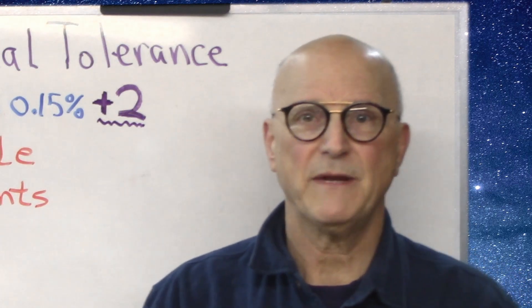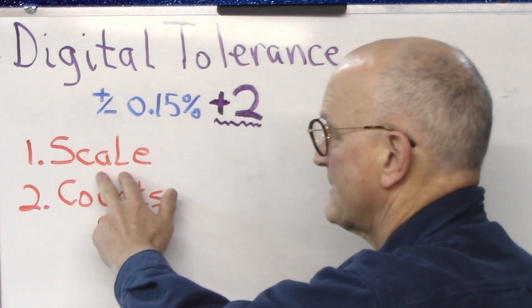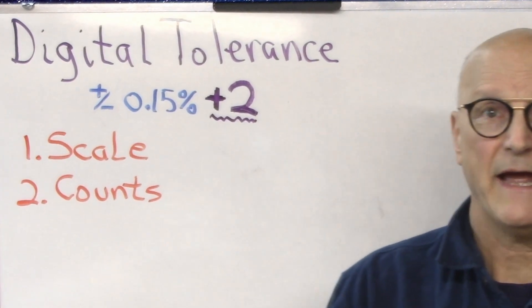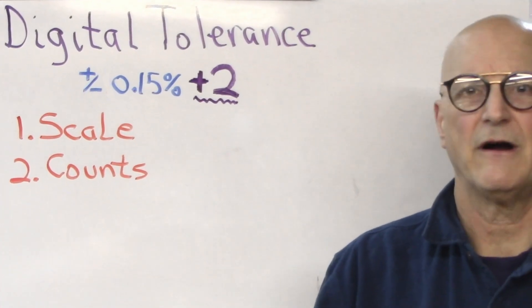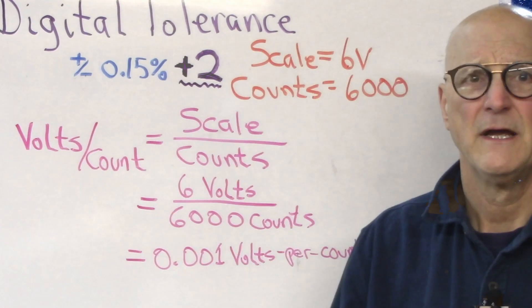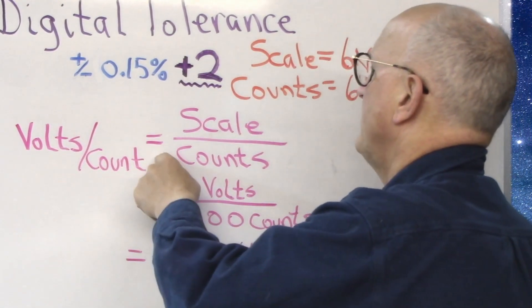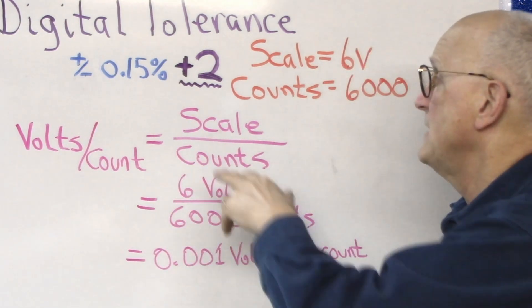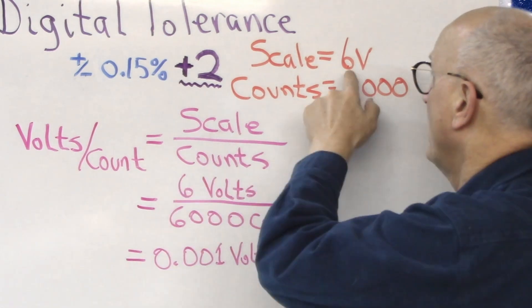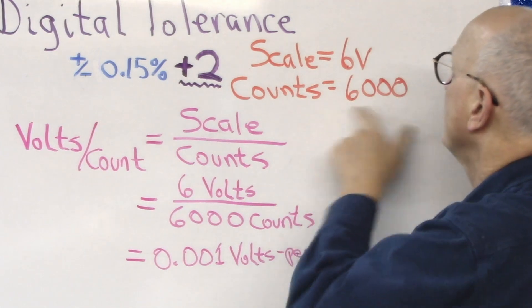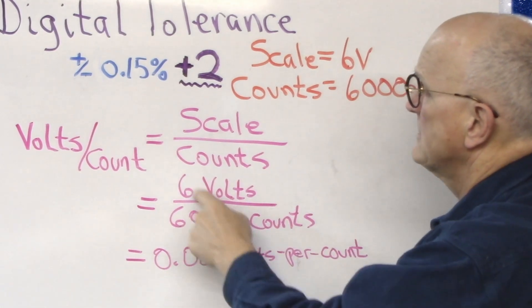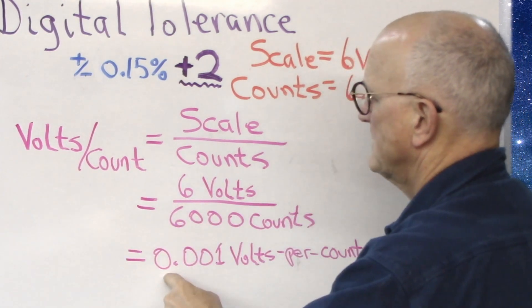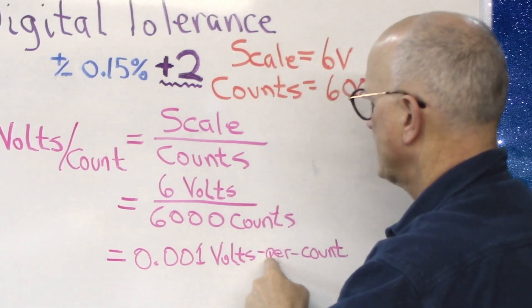I look at the manual and I discover that the Fluke 175 is a 6,000 count DVM when measuring voltage. I now have my two required pieces of information. I'm using a 6-volt scale, and my DVM is a 6,000 count DVM. Next, we need to calculate how many volts there are for every ADC count. To get the volts per count, we divide the full scale voltage for our given scale by the number of counts that our DVM is. In our case, with this measurement, we're on the 6-volt scale, and we have a 6,000 count DVM. So 6 divided by 6,000 tells us that our volts per count is equal to 0.001 volts per count.